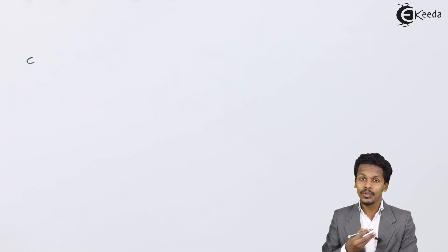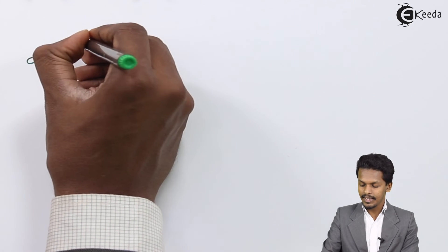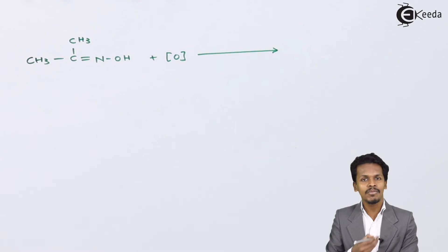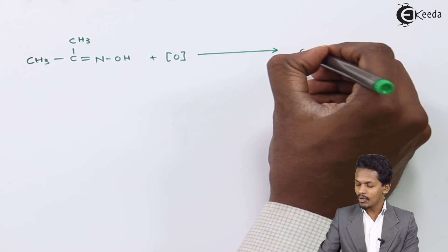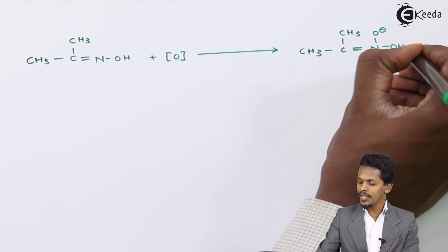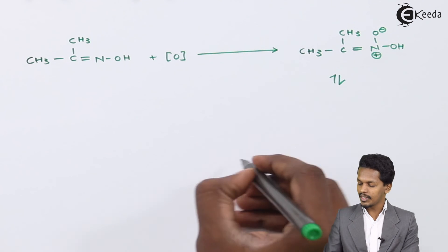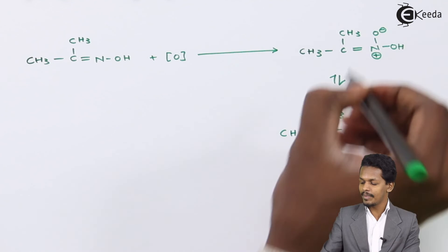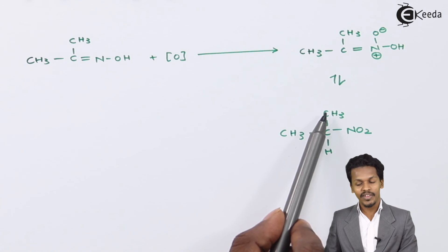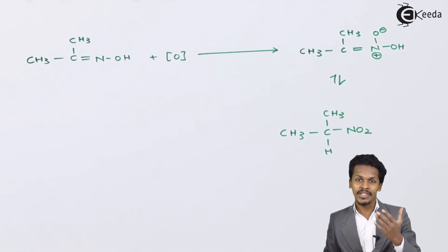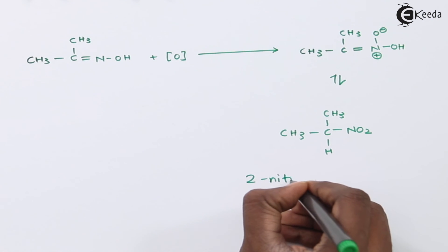Let me give you an example related to ketoxime. Suppose we consider acetoxime, that is CH₃-C(CH₃)=NOH, and treat it with nascent oxygen using trifluoroperoxyacetic acid. The product we obtain is CH₃-C(H)(CH₃)-NO₂. Numbering the carbons using IUPAC nomenclature — carbon 1, carbon 2, carbon 3 — the nitro group is attached to carbon 2. Therefore, the name of this product is 2-nitropropane.